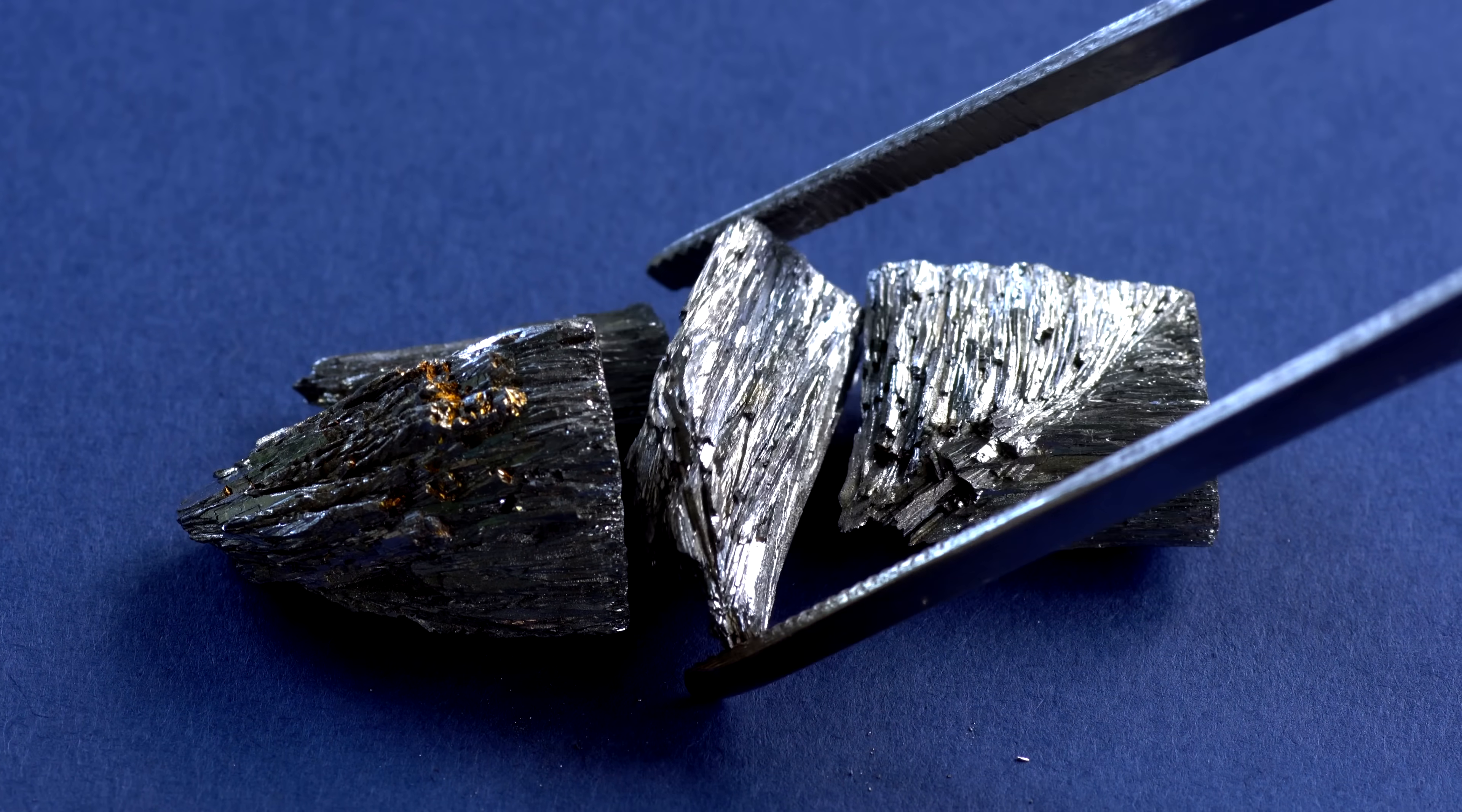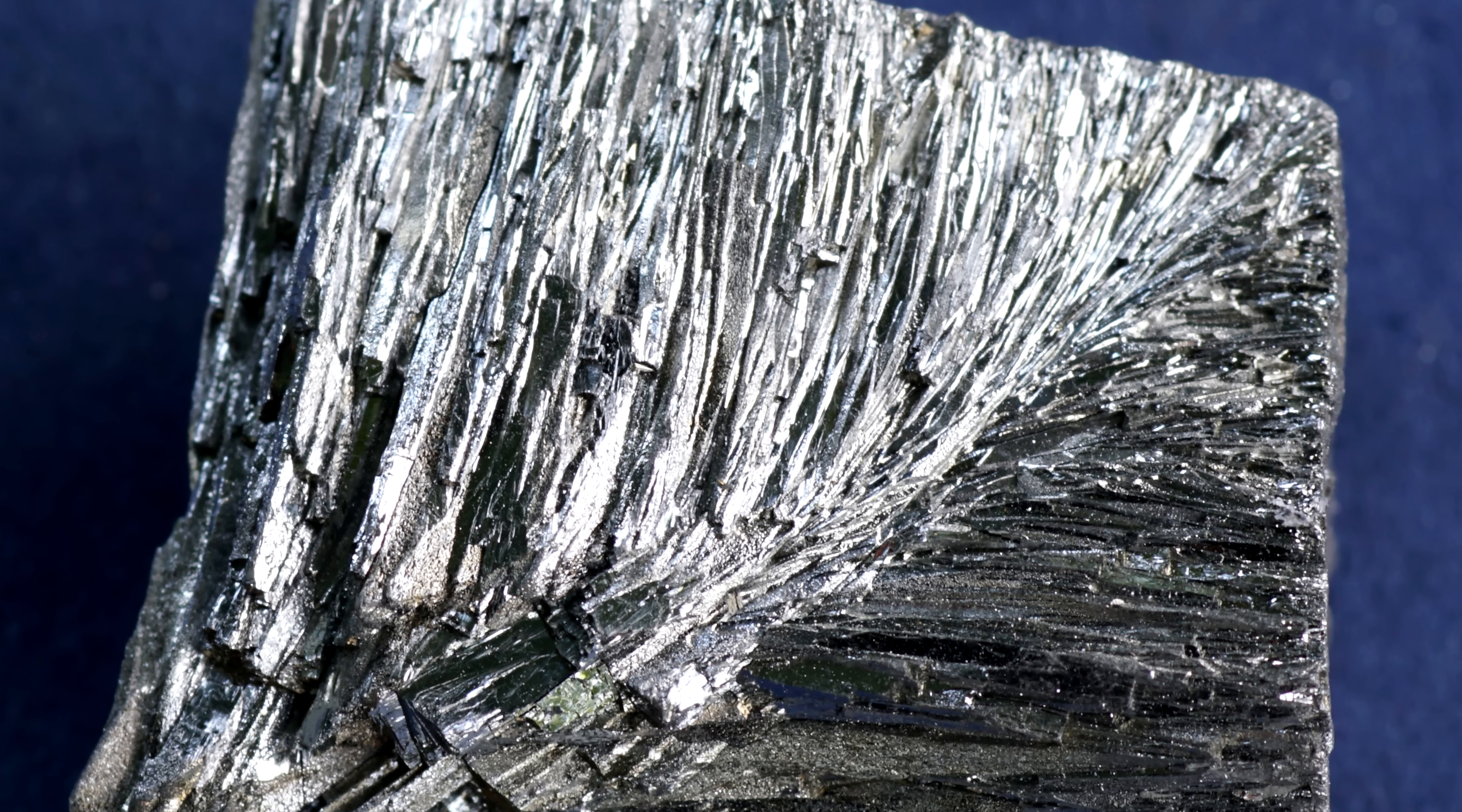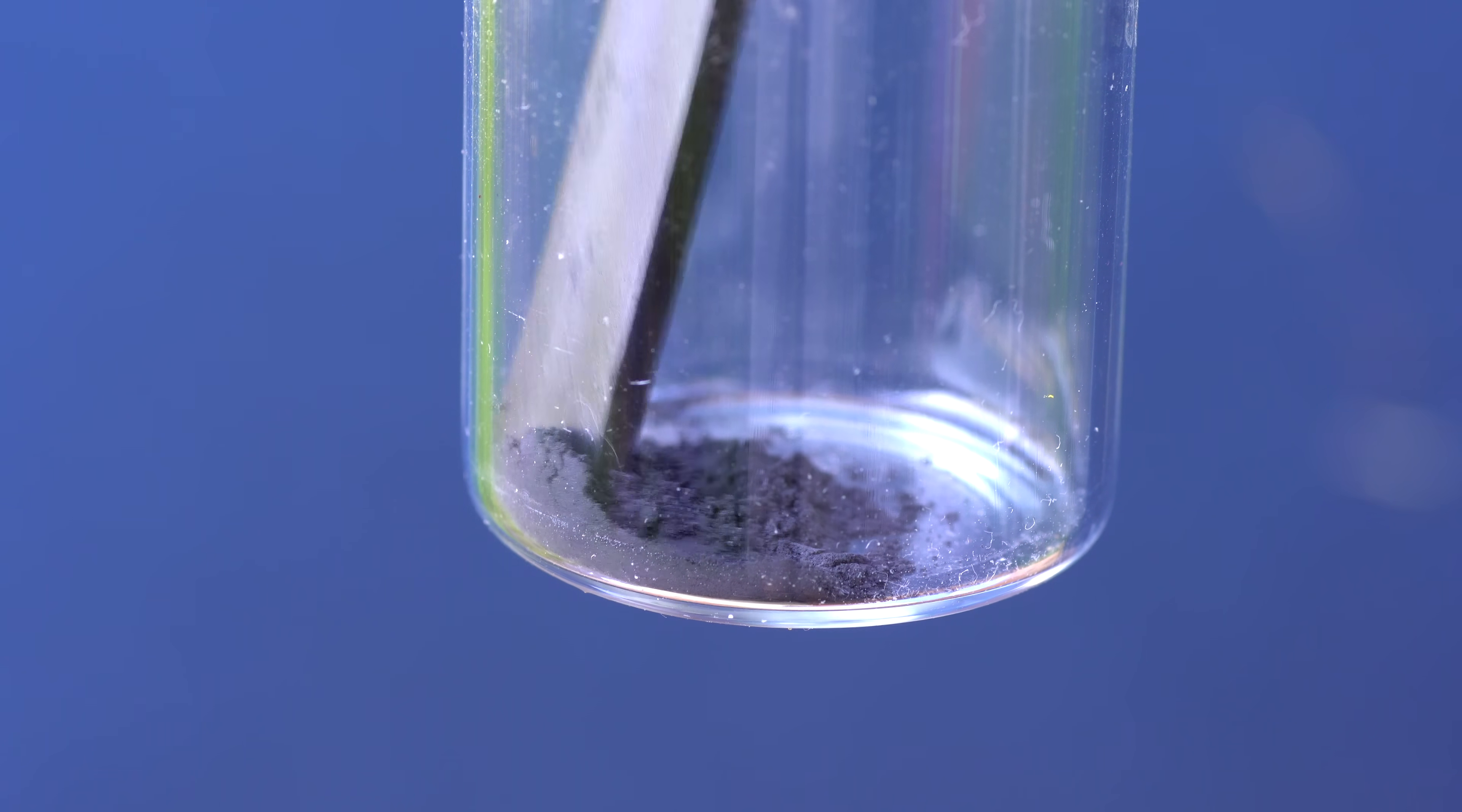In spite of this treacherous property of tellurium, let us continue considering its properties. Tellurium can exist in two forms: crystalline form, the one you have already seen, and amorphous form, which looks like black powder.